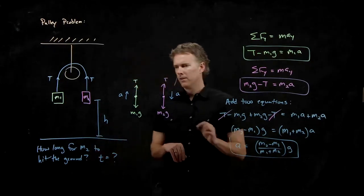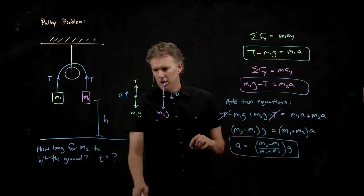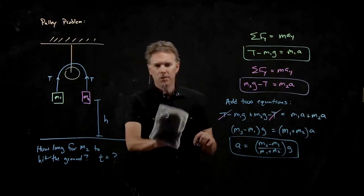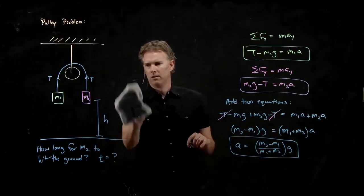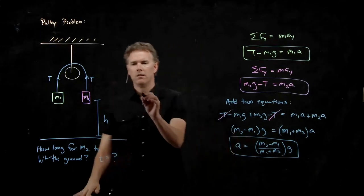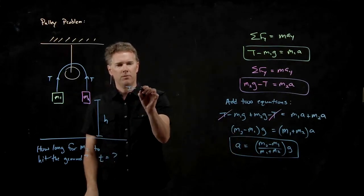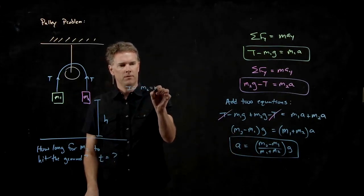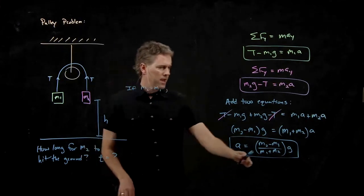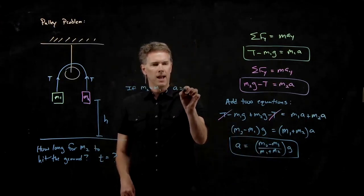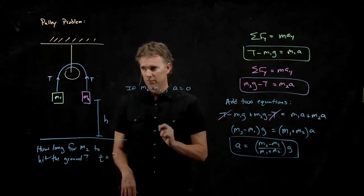What about the limits? Initially, we said if M2 equals M1, then this thing should not move. And if M2 equals M1, you see that we do get A is equal to zero. Good.